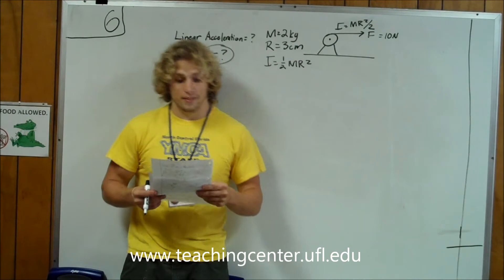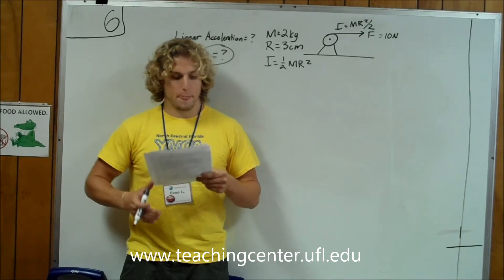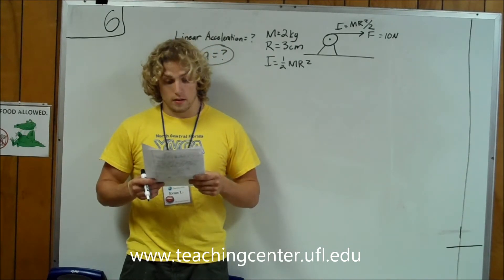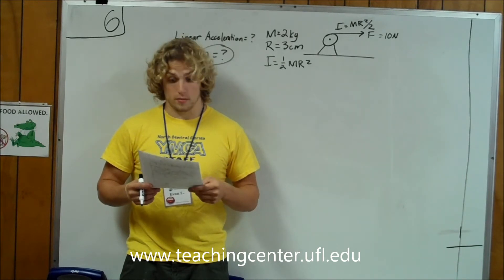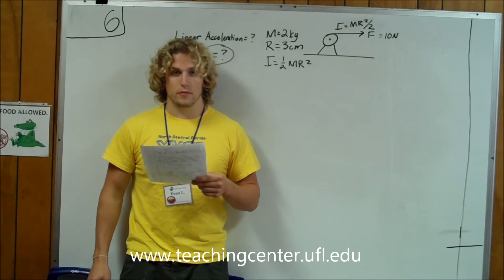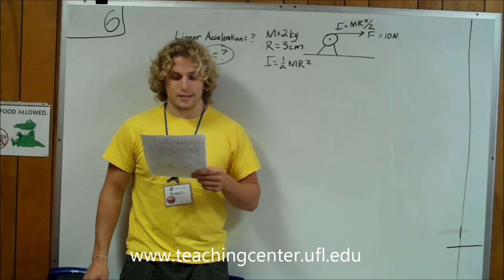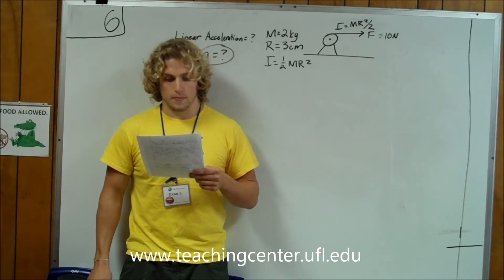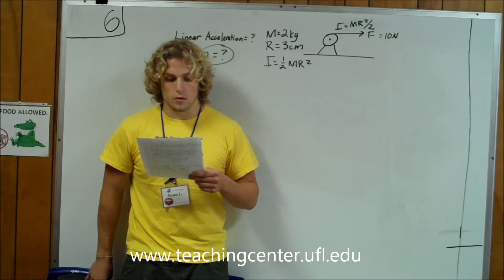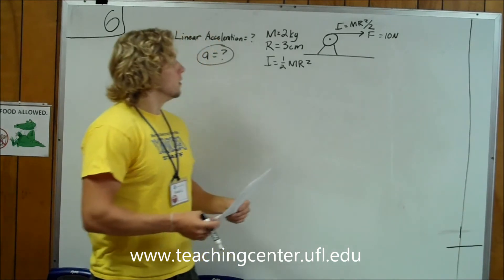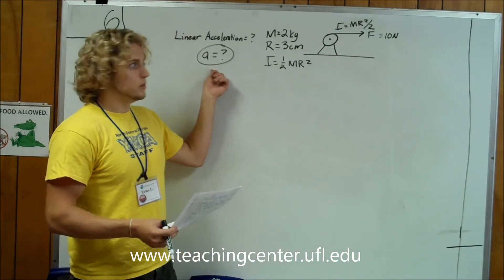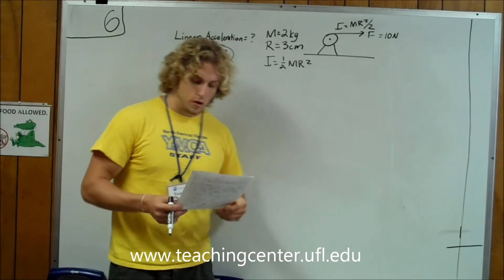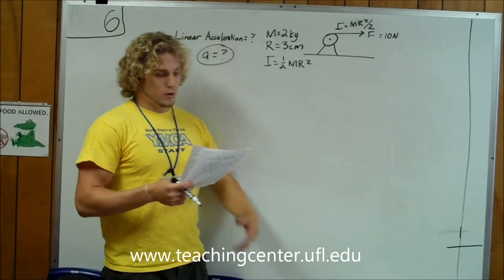Alright, let's start with number 6. A solid disk of mass m equal to 2 kg, radius equal to 3 cm, and rotational inertia I equal to ½mR squared. It's supported by an axle and has a string wrapped around it. What is the magnitude of the linear acceleration of the string if it is pulled with force F equal to 10 newtons? I've already written out the givens in the diagram and what we're looking for — this is what I always do and what you should always do.